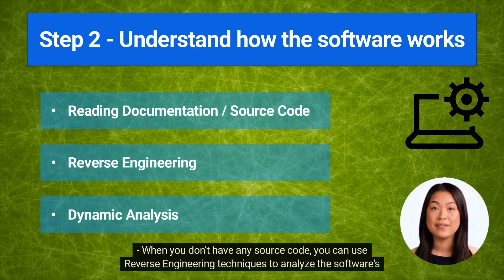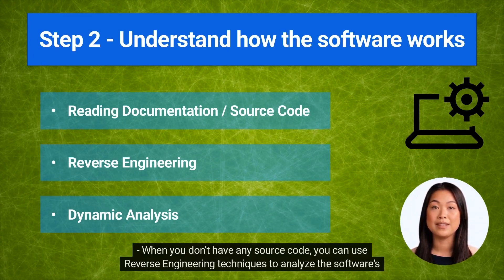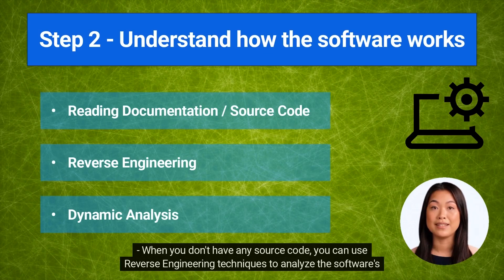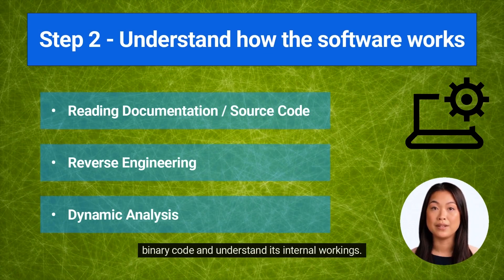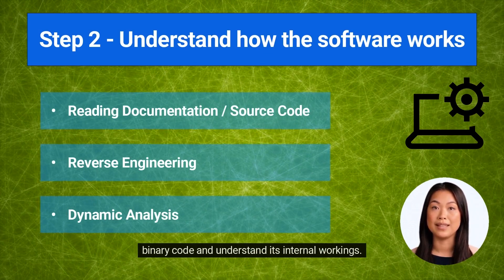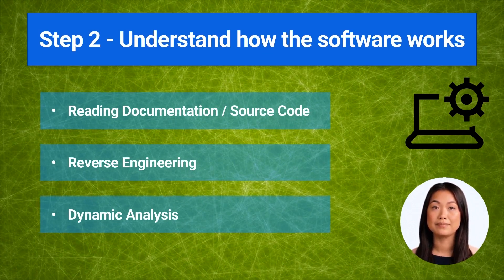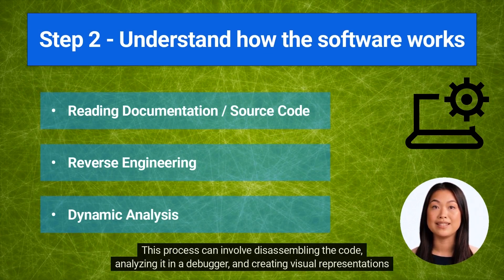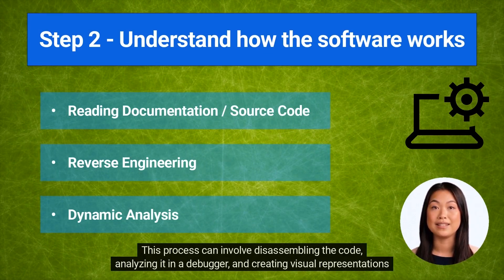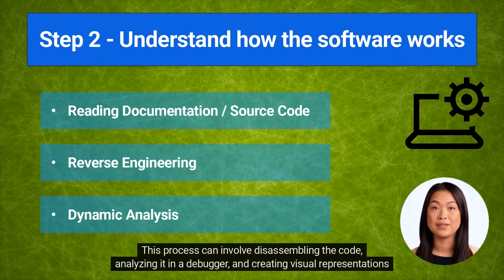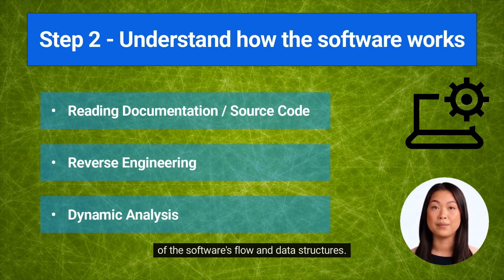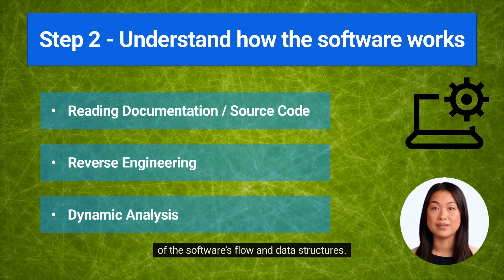When you don't have any source code, you can use reverse engineering techniques to analyze the software's binary code and understand its internal workings. This process can involve disassembling the code, analyzing it in a debugger, and creating visual representations of the software's flow and data structures.